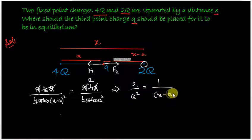Taking the square root on both sides we get √2 upon a equals 1 upon (x minus a).